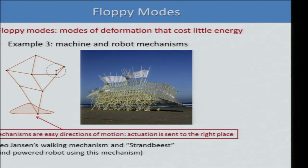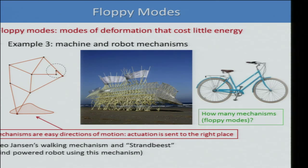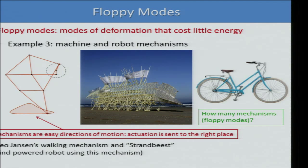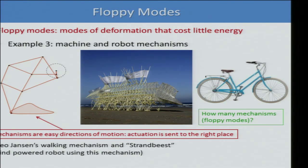Now you've seen many examples of floppy modes. Let me give you a little quiz: how many mechanisms or floppy modes are there in your bike? Ignore small ones like adjusting the seat height — just the big motions. How many floppy modes are there? We ignore the rigid body motion of the whole thing, just the relative motion of different parts. We call those mechanisms.